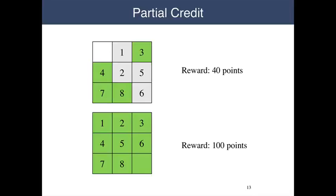For example, the first state shown here is worth forty points since four of the cells, the ones colored green, are in their correct positions. The second state shown here is worth one hundred points since all of the tiles are in their correct positions and the empty cell is in the lower right hand corner.